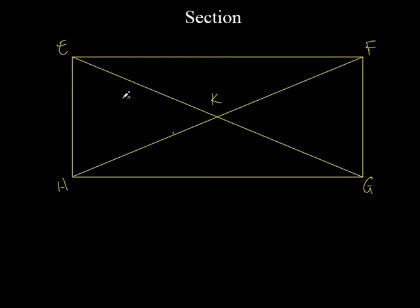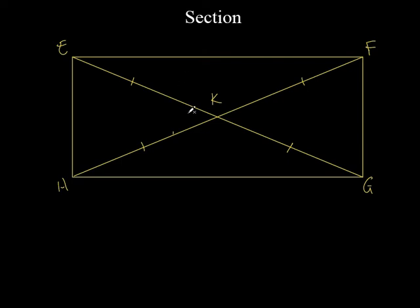Since the diagonals bisect each other, what's true about EK, FK, GK, and HK? They're all going to be the same length. If I start with two equal things — say two pens of identical length — and split both in half, all four halves are equal. EG and FH are exactly the same, so cutting them both in half means all four segments are equal. That's only true about a rectangle, not a rhombus.